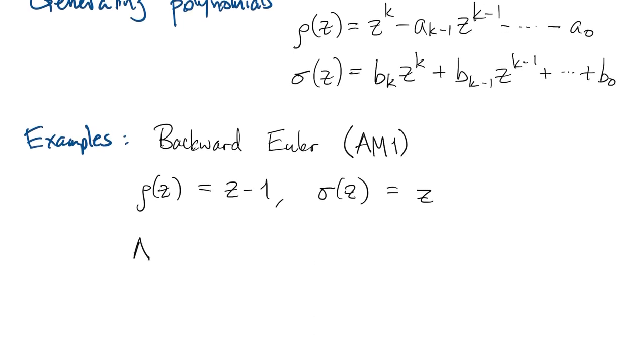The other method, the first method that I wrote out, is actually the Adams-Bashforth method of order 2. That has rho equal to z squared minus z, and sigma equal to 3 half z minus 1 half.